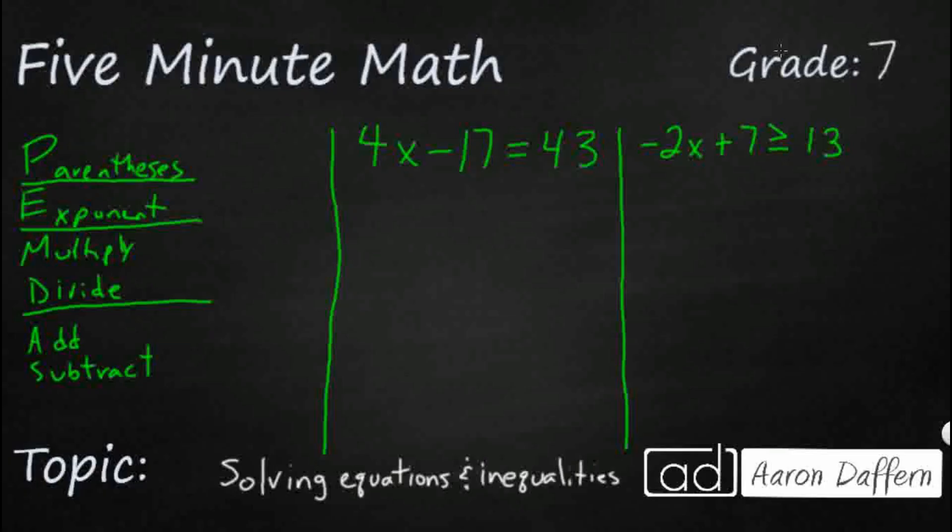So what we're looking for is we always want to do one thing, and that is to isolate the variable. We need to get the variable, in this case it's going to be x for both of these, we need to get that by itself. And how do we do that? We actually start from the bottom up.